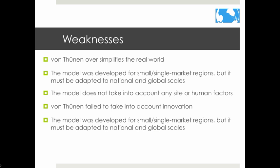Von Thünen's model has many weaknesses, which he actually recognized in his book. He oversimplified the real world — a weakness of almost any model. The model is often criticized for having little modern-day relevance. Its main weaknesses include: not accounting for site or human factors; not accounting for different climate and soil conditions; not accounting for barriers like roads or rivers; not accounting for social customs and government policies. Von Thünen also failed to take into account innovation, and the model was based only on single or small market regions.